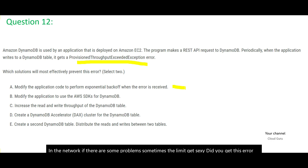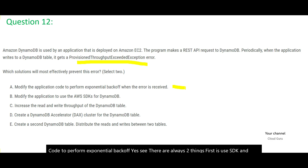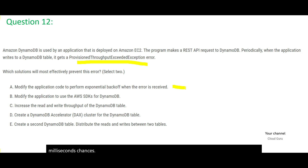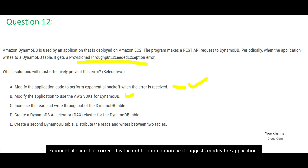Option A: modify the application code to perform exponential backoff — yes, this is correct. There are two things: use SDK and exponential backoff. SDK ensures retries. Exponential backoff means it will not retry after one or two milliseconds but will wait for 30, 50, or 100 milliseconds before making a retry, because the network glitch may not be resolved in a few milliseconds. Option B: modify the application to use AWS SDK for DynamoDB — this is also correct, because SDK by default allows you to plug in retries with multiple retry attempts.